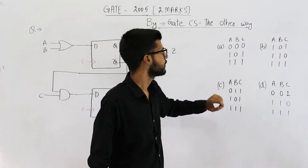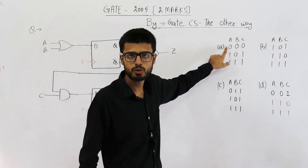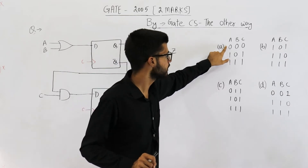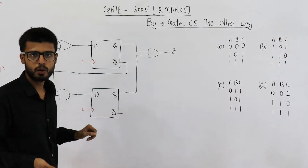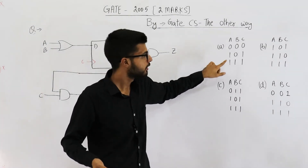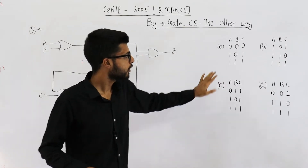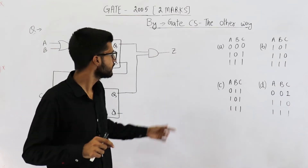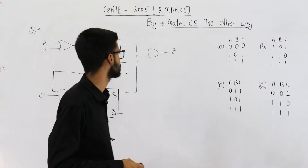Which of the following input sequences will always generate a 1 at output Z at the end of the third cycle? You can see all four options are noted down here. We are going to analyze them one by one. Let us analyze option A. They are saying values of A, B, C are 0,0,0 before giving the first clock. Then the first clock is given, then we set the second input and give the second clock, then the third input and give the third clock. For which of these four options will Z equal 1 after the third clock cycle?